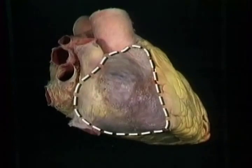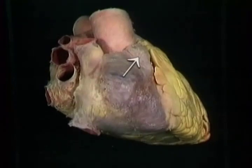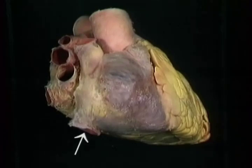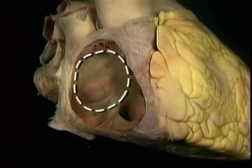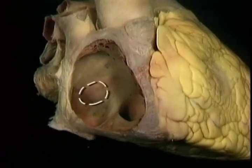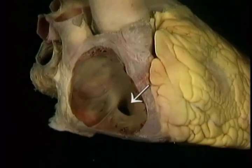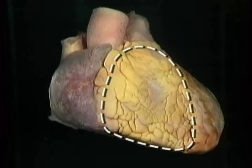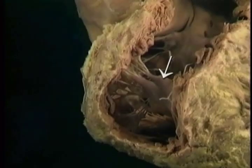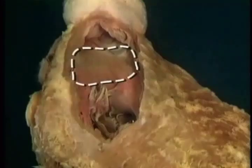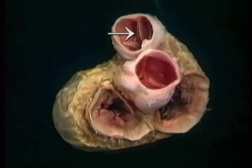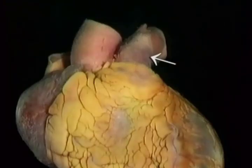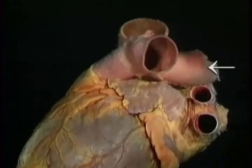Here's the right atrium, the atrial appendage, the superior vena cava, and the inferior vena cava. Here's the interatrial septum, the fossa ovale, the opening for the coronary sinus, and the tricuspid valve. Here's the right ventricle, here are the papillary muscles and the chordae tendineae, and the infundibulum. Here's the pulmonary valve and the pulmonary trunk, branching into the left pulmonary artery and the right pulmonary artery.